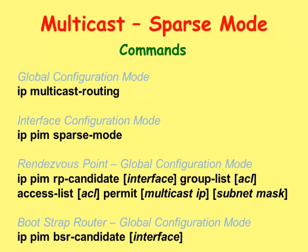Let's look at the commands needed to pass multicast traffic through the routers using the bootstrap routing protocol. In the global configuration mode, you will need to type the IP multicast routing command that enables IP multicasting on the router. In the interface configuration mode, we will need to type the IP PIM sparse mode command that enables PIM sparse mode on the interface.